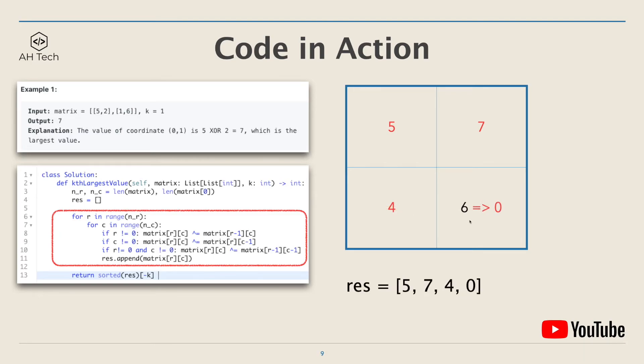The last cell: it will be 6 XOR 4 XOR 7 XOR 5, which is 0, and then append 0 to res.